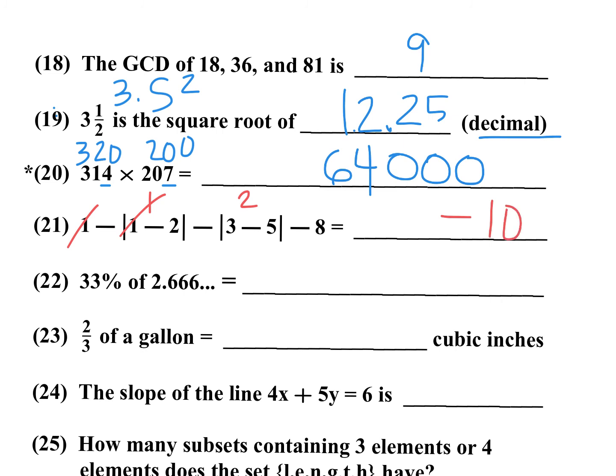33% of 2.6 repeating. 2.6 repeating is 2 and 2 thirds. So, which is 8 over 3. Multiply 33 times 8 over 3. And you're going to have 11 times 8 is 88 over 100. Or 0.88. Remember, percent means per 100. So I have to divide by 100. 0.88.